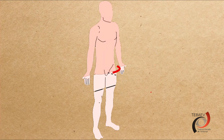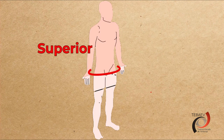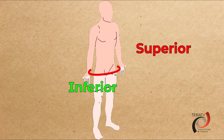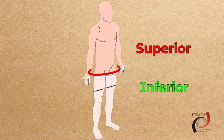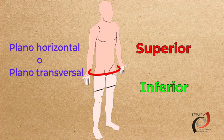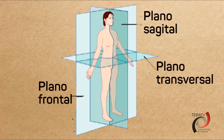Una tercera línea segmenta el cuerpo en una mitad superior y otra inferior. Este corte imaginario se llama plano horizontal o plano transversal. Estos son los tres planos principales en que se divide el cuerpo humano para su estudio.